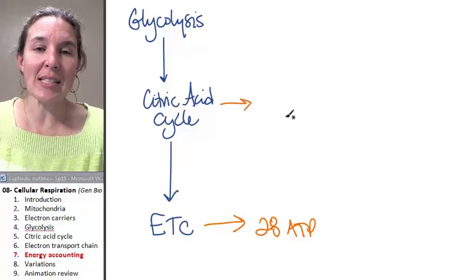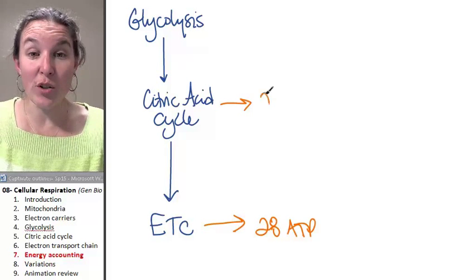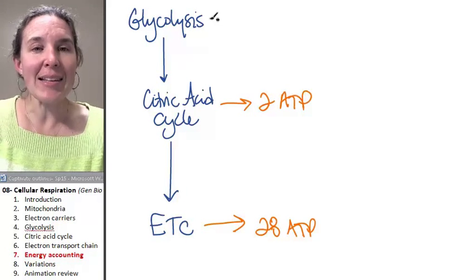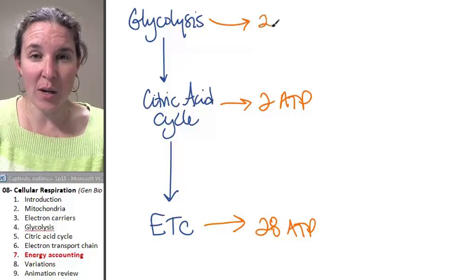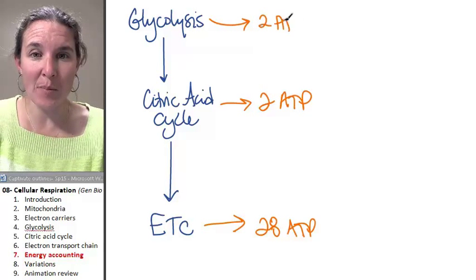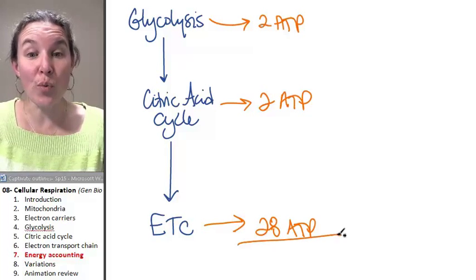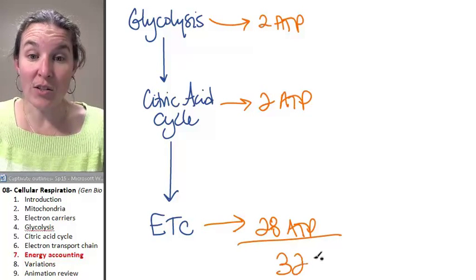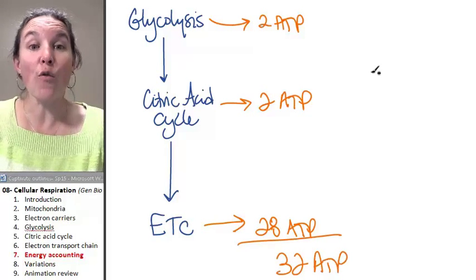From the citric acid cycle, do you remember that we actually ended up with two ATPs? And the same thing from glycolysis, we actually ended up with two ATPs. And so our grand total is 32 ATPs from what?